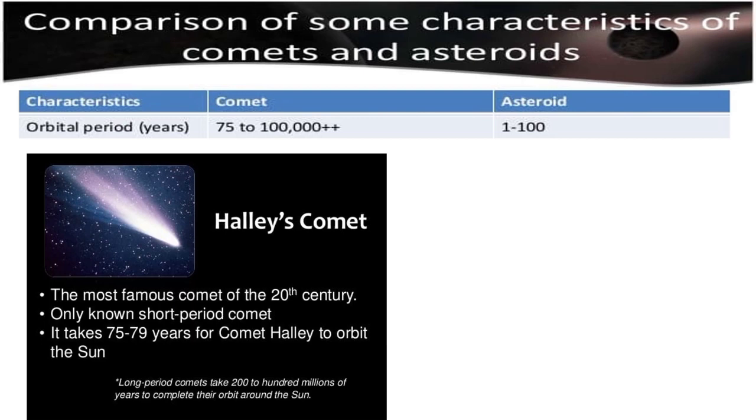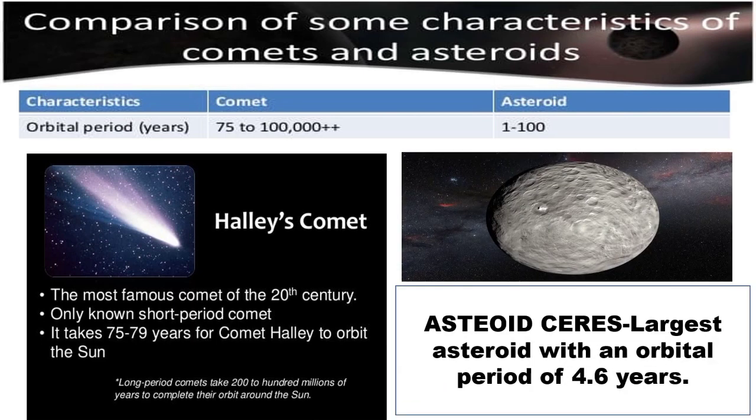Note, long-period comets take 200 to 100 million years to complete their orbit around the Sun. While asteroids orbit the Sun for about 1 to 100 years. Asteroid Ceres is the largest asteroid with an orbital period of 4.6 years.